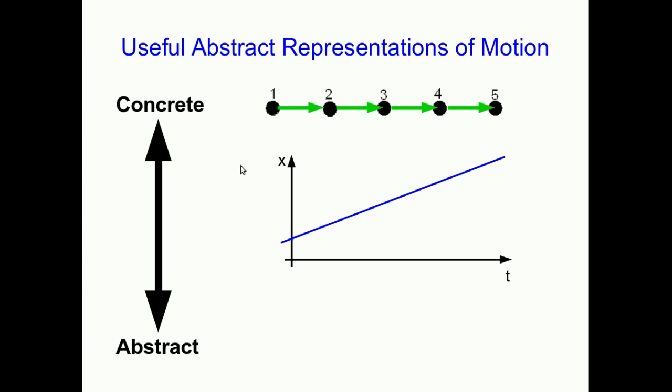Well, another useful, more powerful perhaps, but also more abstract representation would be a graph which describes the motion. This would be a position versus time graph. And then a further abstraction that gets us even more predictive power would be an equation.